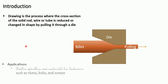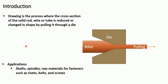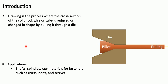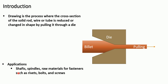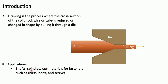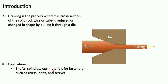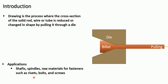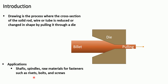Now let us see the applications of the drawing process. Drawing process is used for the manufacturing of shafts, spindles, and raw materials for fasteners such as rivets, bolts, and screws.